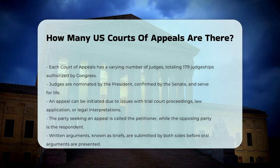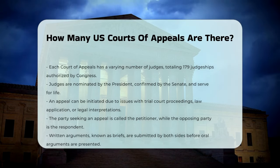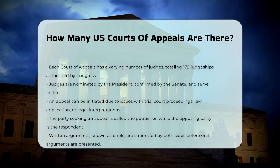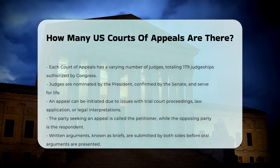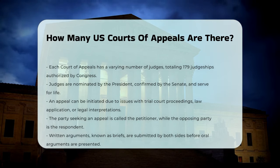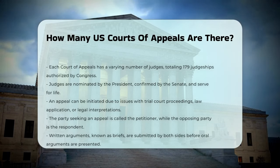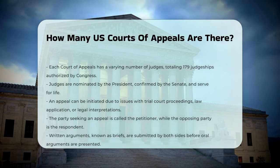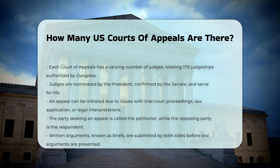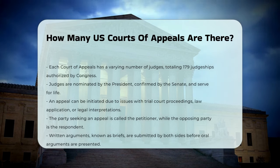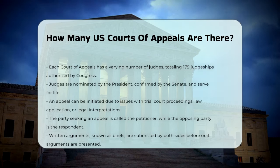Appeals Process: An appeal can be made if there are issues with the trial court proceedings, the law applied, or how the law was applied. The side seeking an appeal is called the petitioner, and the other side is known as the respondent. Before oral arguments, each side submits written arguments called briefs to the court.